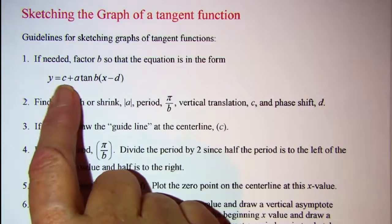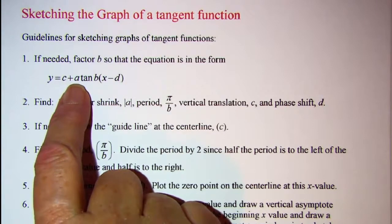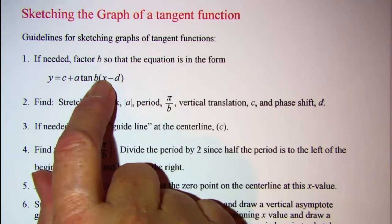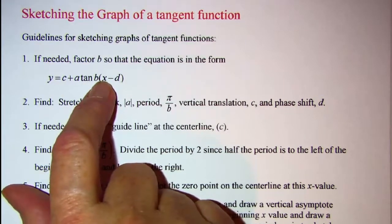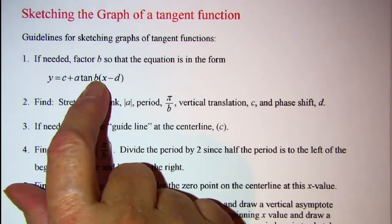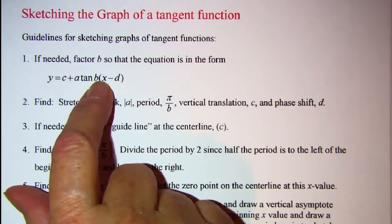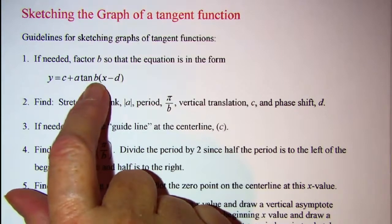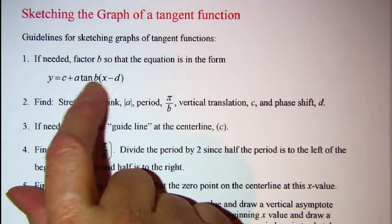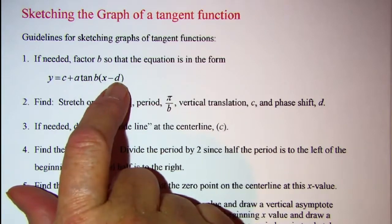One thing that we need to do in our function is if the coefficient of x is not factored out, we need to do so that it's outside of the parentheses because we'll be using that B value, and that also factors out gives us a different value for the D.